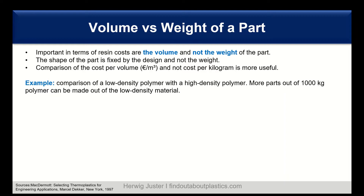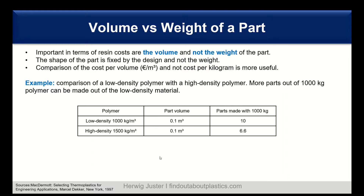Here I have an example of a low density polymer versus a high density polymer. You can see here: low density is 1000 and high density is 1500. The part volume is 0.1 in both cases. However, with the low density material I can make with one ton of material 10 parts, whereas with the high density, with the same amount of material, I can only make 6.6, so in this case 6 parts.